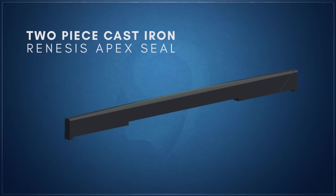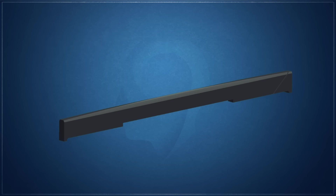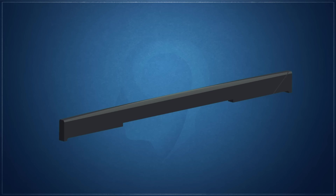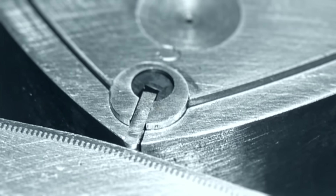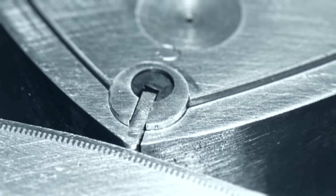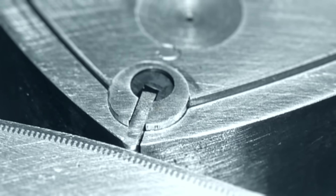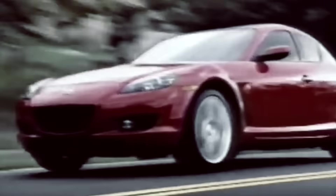The apex seal in the Renesis engine was a two-piece design made from cast iron with low-carbon content. This version retained the 2mm thickness used in the previous generation, but the height was reduced to 4.5mm versus the three-piece's overall height of 4.8mm. This version was also crowned and the tips were rounded to better follow the rotor housing's sliding surfaces up to the 9,000rpm redline. Additionally, the spring corner seal's contact surface was chrome-plated and a cast-iron plug replaced the elastic filler piece, since the seal is now exposed to the hot exhaust port area.